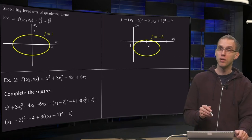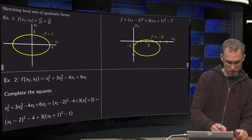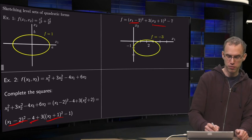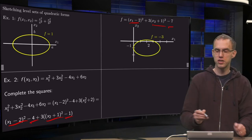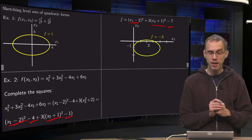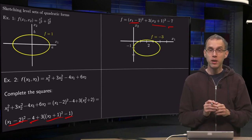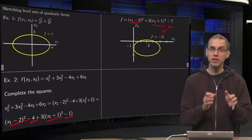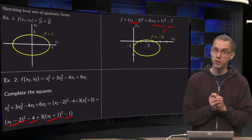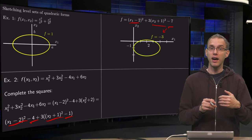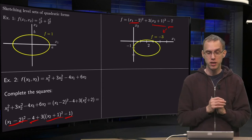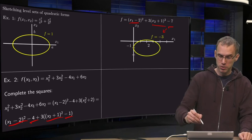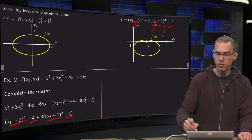So what do we get then if we combine everything? (x1 minus 2) squared over here, 3 times (x2 plus 1) squared, and a minus 4, a minus 3 together, a minus 7. So there we go. So what do we have over here? Well, if we sketch for example the level curves f equals minus 3, then you get (x1 minus 2) squared plus 3 times (x2 plus 1) squared equals 4, which is the same as y1 squared plus 3y2 squared equals 4, which would be an ellipse, but now an ellipse centered around the point (2, -1).